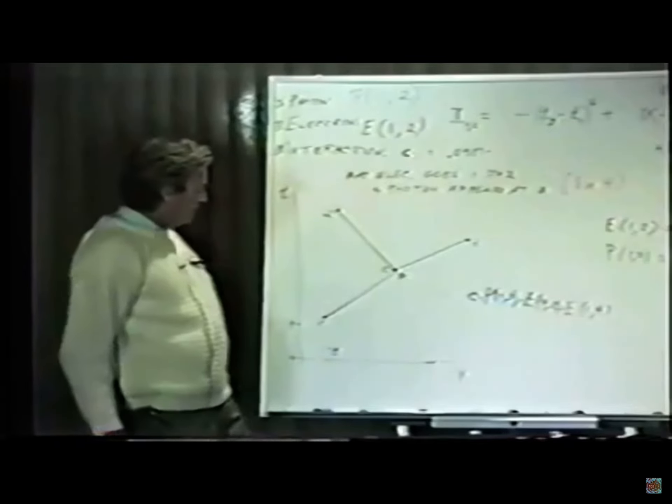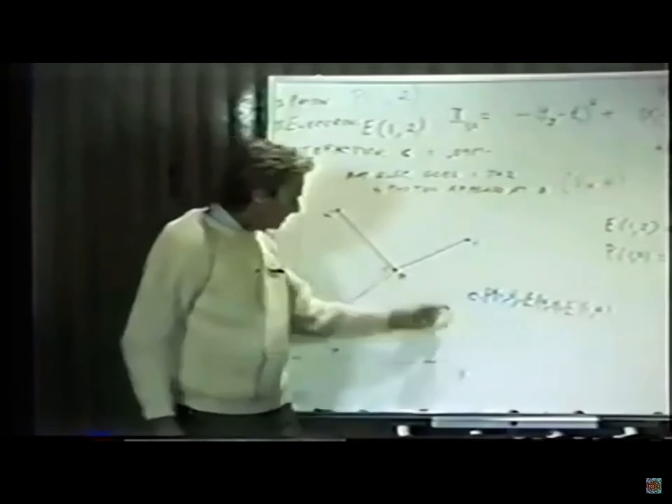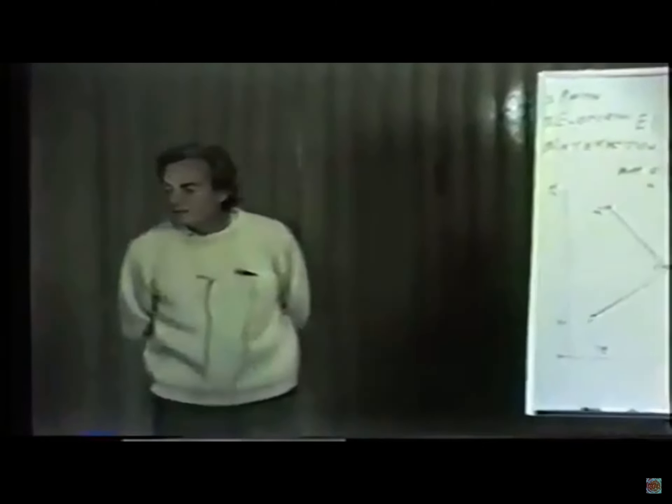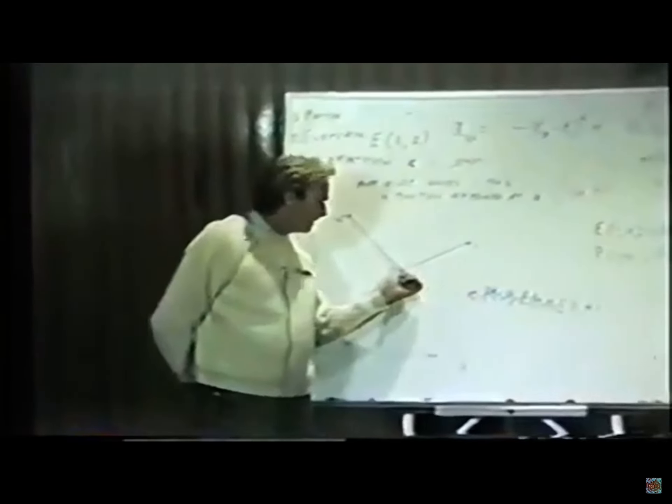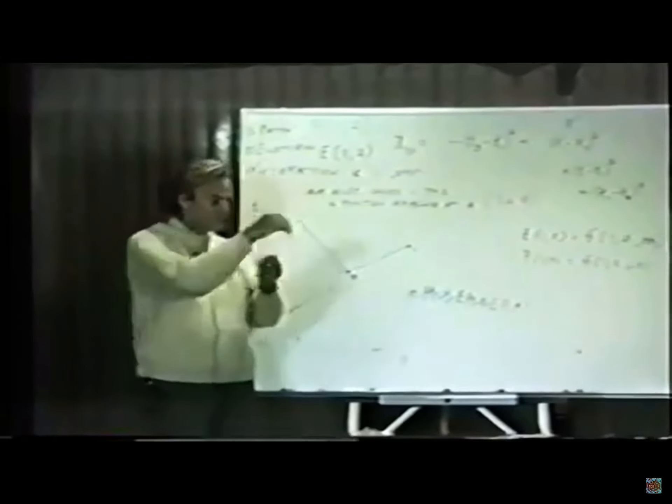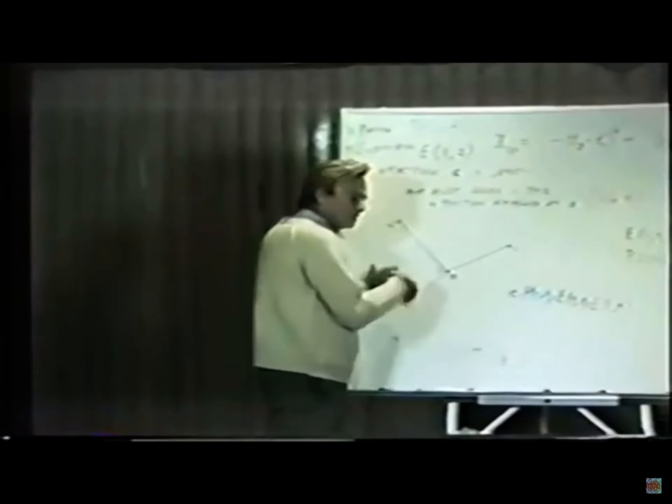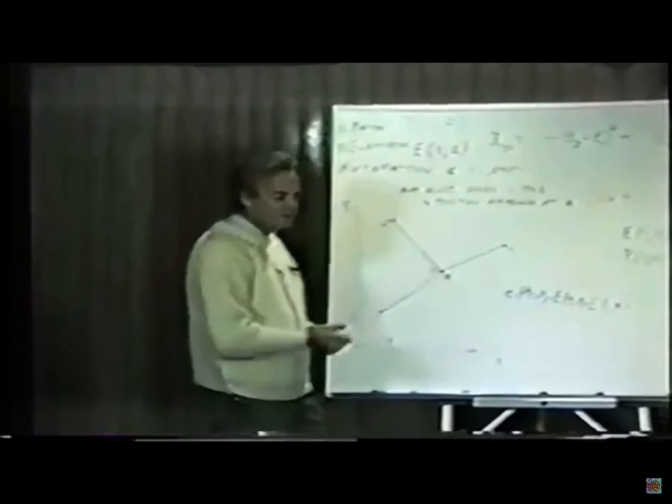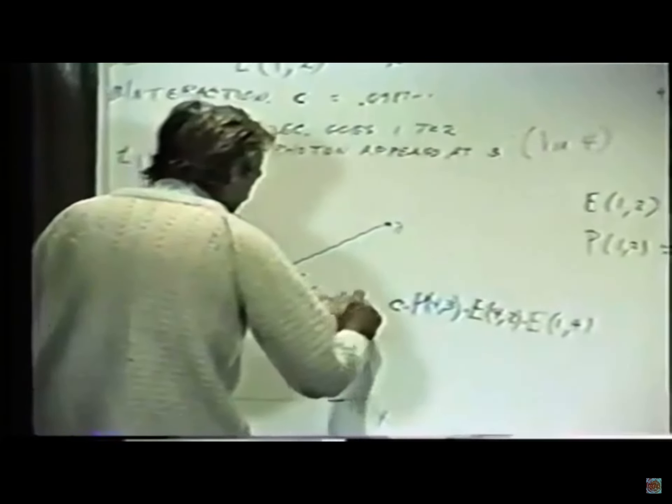However, if all I knew was that the electron started here and ended here and the photon ended here, this isn't the right amplitude. Why? You don't know where four was. This is the arrow if it happened to do it there, but it may have been that number four was somewhere else. It might have been here or here or here, and for each of those points there's a total amplitude. Those are alternative possibilities; those amplitudes have to be summed.